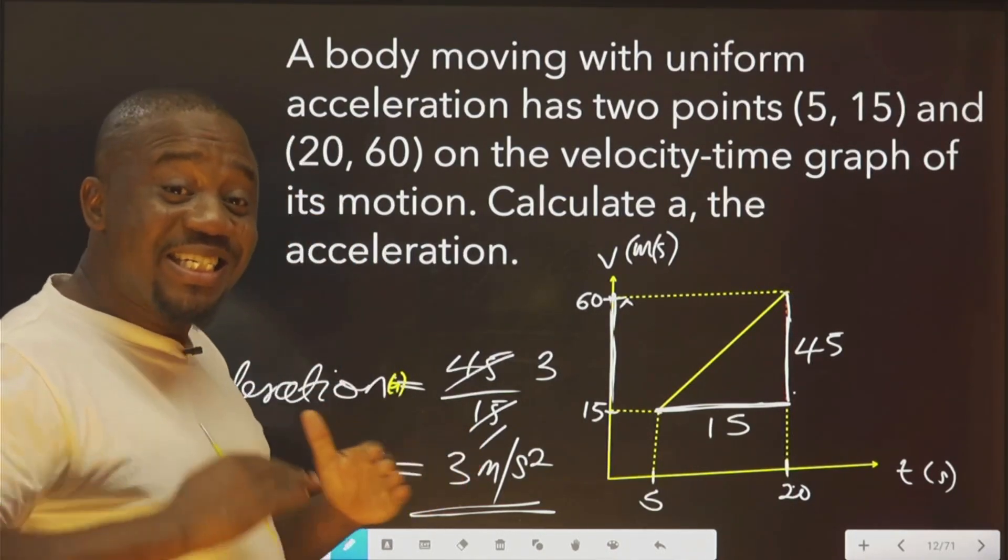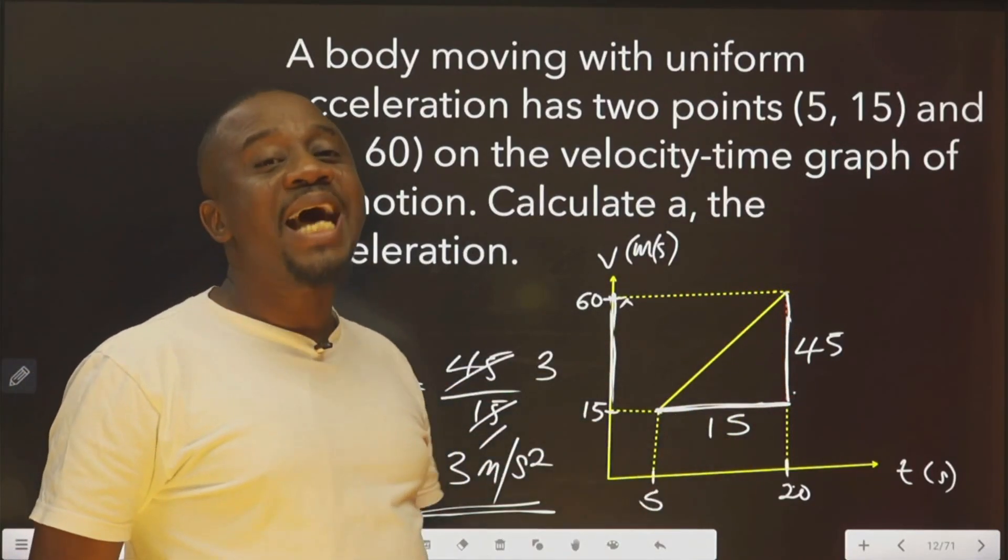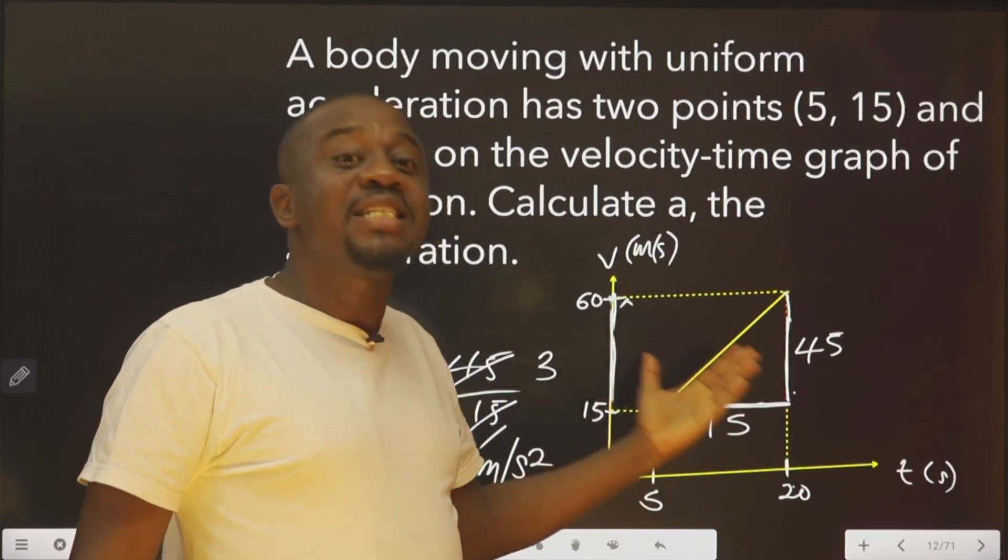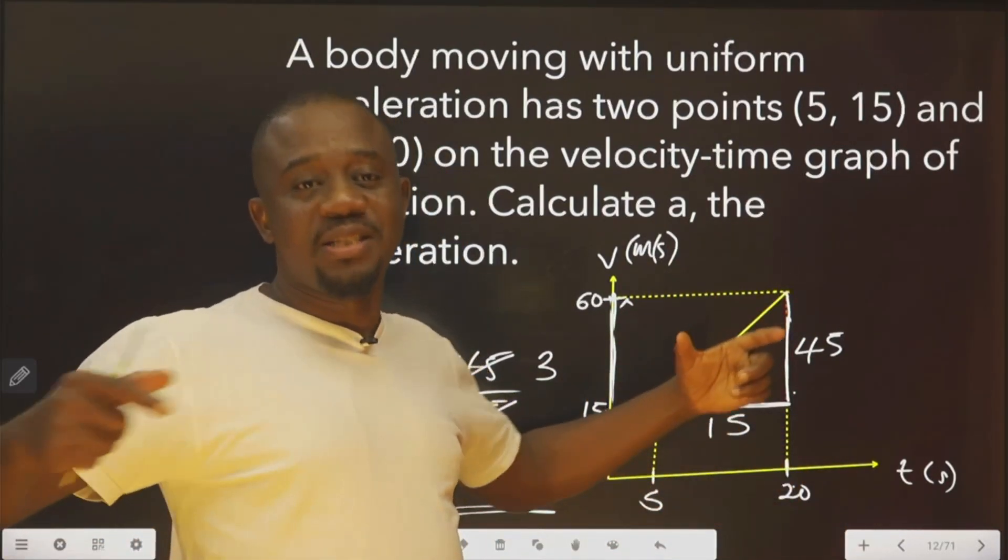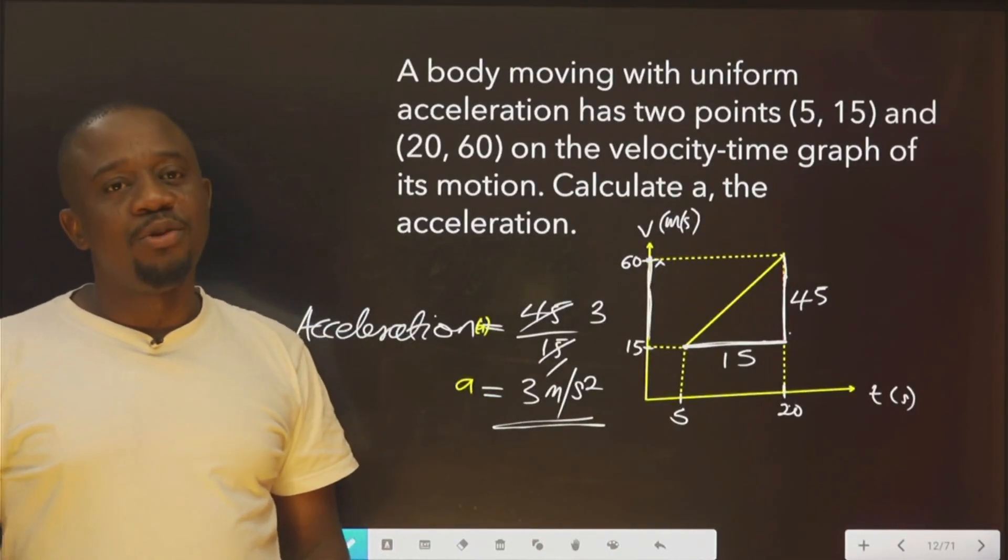What you understand is change in velocity over change in time. This is change in velocity. Change in time. Coordinates of points. All this understood. Thank you for doing.